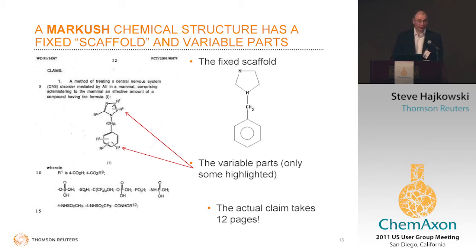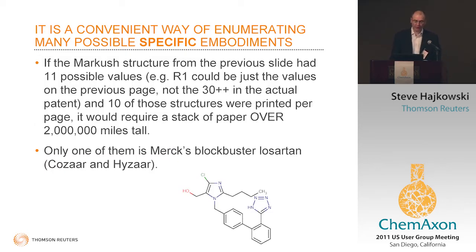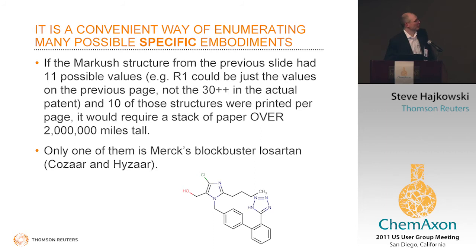Markush structures can be very complicated. The actual full claim for one Markush structure shown is 12 full pages of chemical drawings and text to describe the invention — so they can be really quite complex. And of course, the more complex they get, the more difficult it is to understand the content of the Markush. That's partly where the ChemAxon tools come into play. Just to give an idea of the number of possible permutations in that particular structure: it would be about 10 to the 15 compounds protected by that Markush. If listed as separate specific compounds, that would be a stack of paper more than 2 million miles tall — a very efficient way to protect a large chemical space. That particular patent was important as it protects a blockbuster drug.